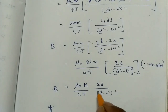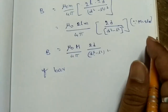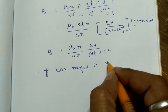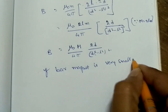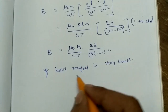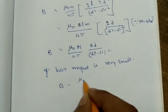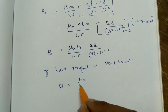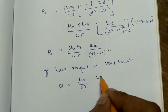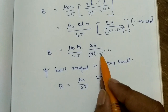If the bar magnet is very small, meaning the length is very small, then L is a very small value and L approaches 0. Then B = μ₀/4π × 2Md / d⁴ = μ₀/4π × 2M / d³.